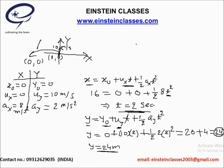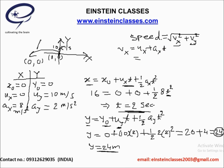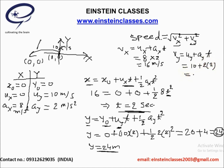The next part is to find the speed at t = 2 seconds. Speed = √(vₓ² + vᵧ²). To find vₓ: vₓ = uₓ + aₓt = 0 + 8×2 = 16 m/s. To find vᵧ: vᵧ = uᵧ + aᵧt = 10 + 2×2 = 14 m/s. Substituting into the speed formula gives the speed of the particle at t = 2 seconds.